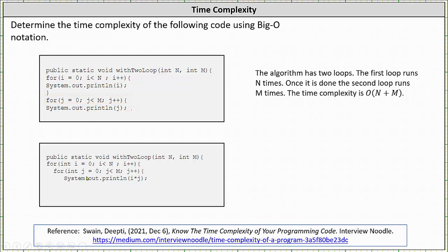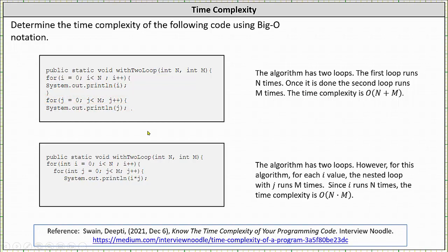Looking at our second example, again we have two loops, but now we have a nested loop. The algorithm has two loops. However, for this algorithm, for each i, the nested loop with j runs m times. Since i runs n times, the time complexity is big O of n times m.